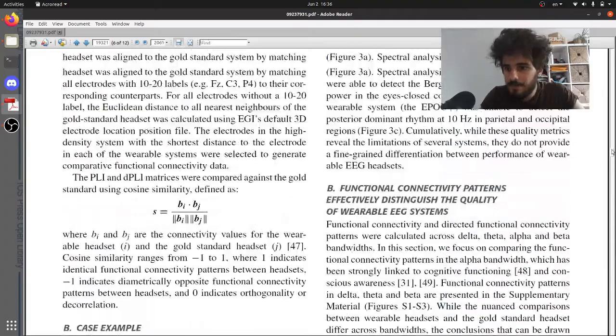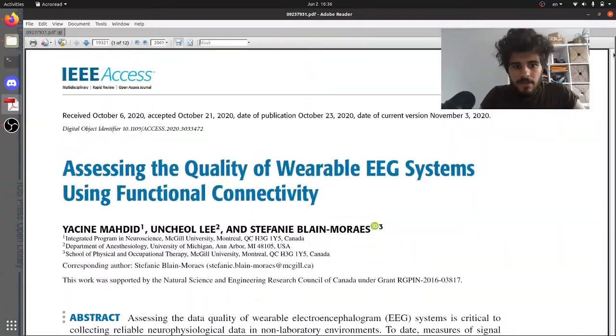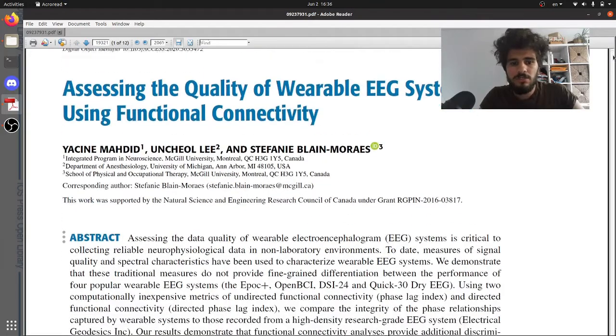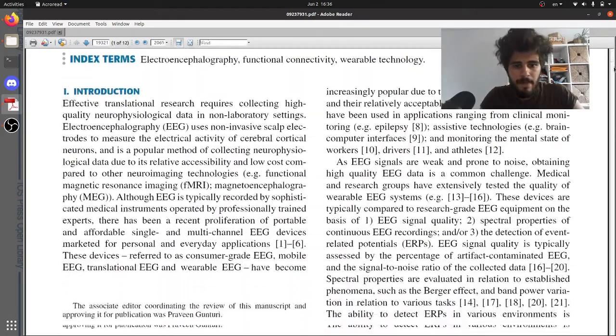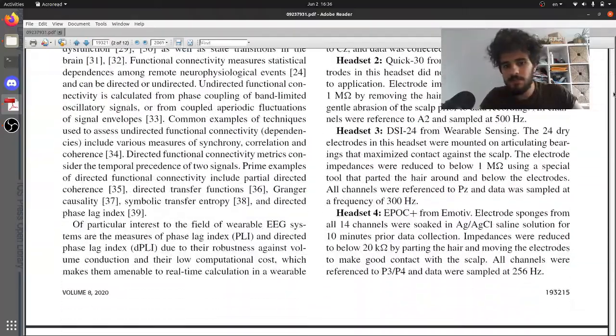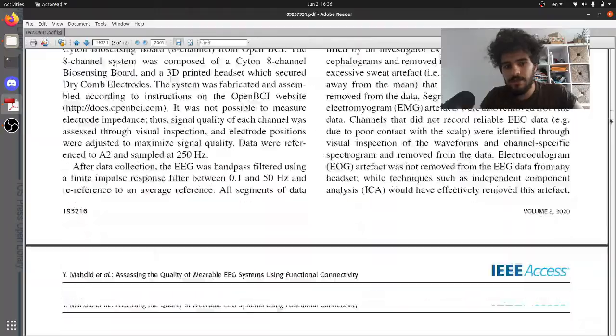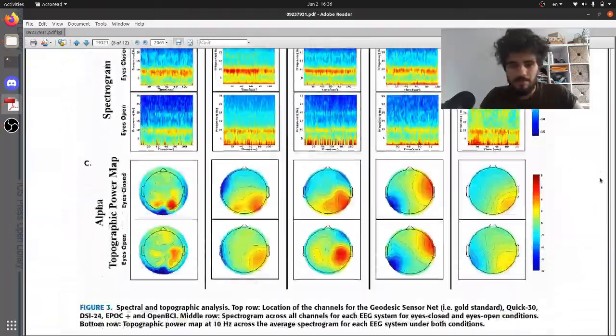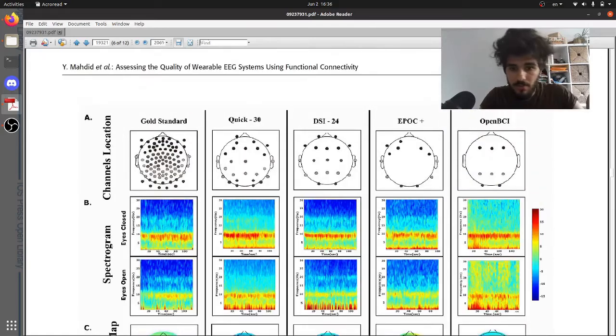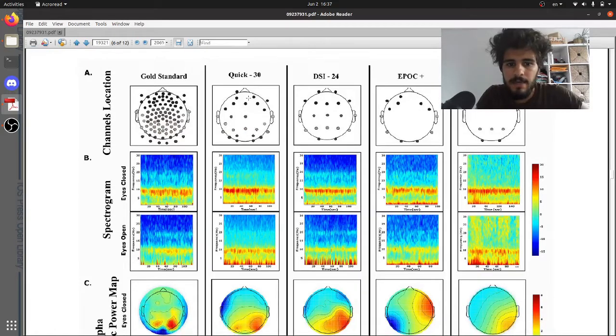Just to show you an example, here's a paper I've written on the quality of wearable EEG systems using functional connectivity. What I did basically was record a bunch of data on myself multiple times with different headsets. This is actually my brain on multiple headsets. Here we have a high-density EEG headset with 129 channels, here we have a dry headset with 30 channels, 24 here, this was the Epoc, and then the OpenBCI which is a do-it-yourself kind of headset.